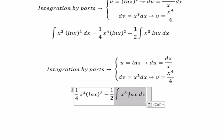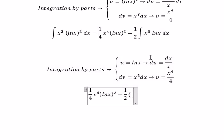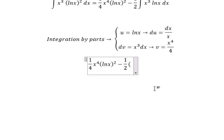So this one, we change to u multiplied with v. And you got 1 over 4 x to the power of 4 ln x. And we have the negative